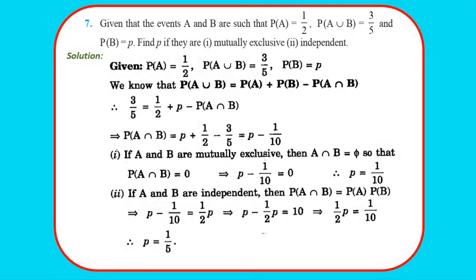Question 7: Given events A and B such that P(A) = 1/2, P(A∪B) = 3/5, and P(B) = p. Find p if (i) they are mutually exclusive and (ii) independent. Using P(A∪B) = P(A) + P(B) - P(A∩B), we get P(A∩B) = p + 1/2 - 3/5 = p - 1/10.